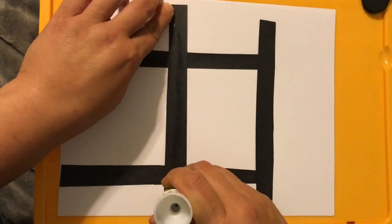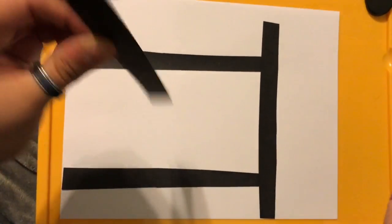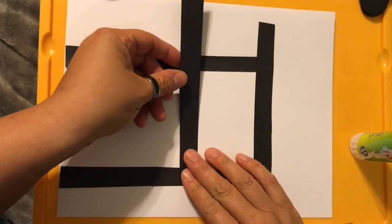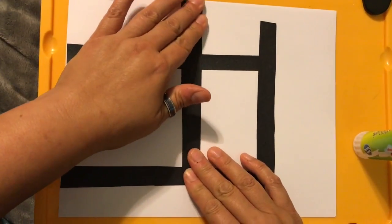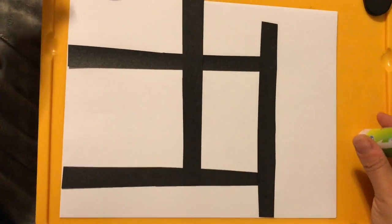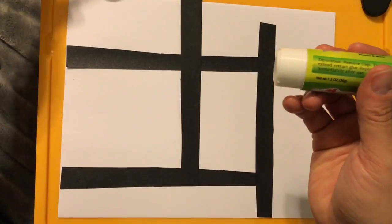It kind of looks like a tic-tac-toe board right now. I think I'll do something like that and then I think I'll start to do some diagonals now.